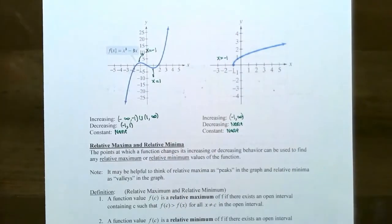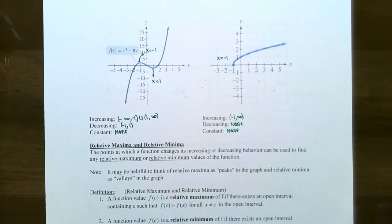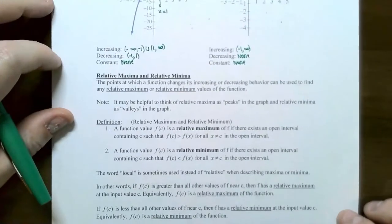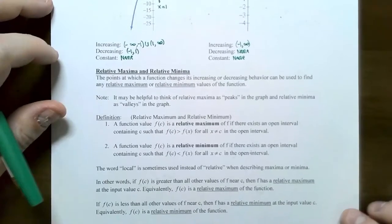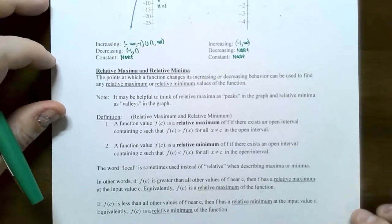So this gives you an idea of how to find intervals where a graph is increasing, decreasing, or constant. You only use the x-values, and you always use parentheses. Now that we know increasing, decreasing, and constant, let's look at the next topic.